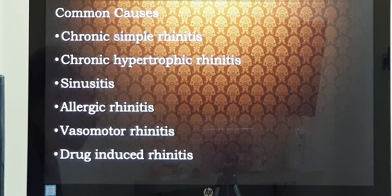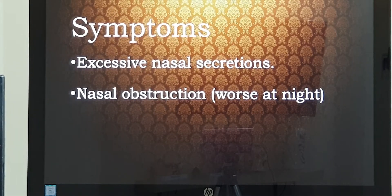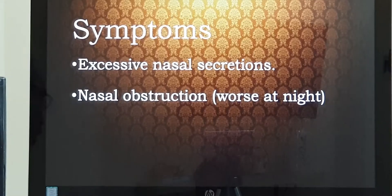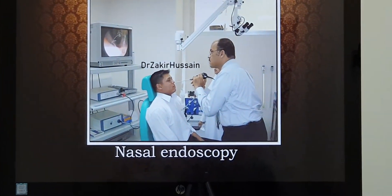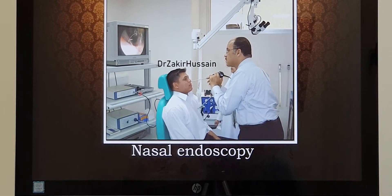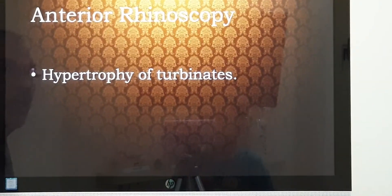We will deal with how to manage inferior turbinate hypertrophy. The patient's complaints are persistent nasal obstruction, worse at night, and nasal discharge. We perform a nasal endoscopy, and the finding I have already shown you — the inferior turbinates are hypertrophied.